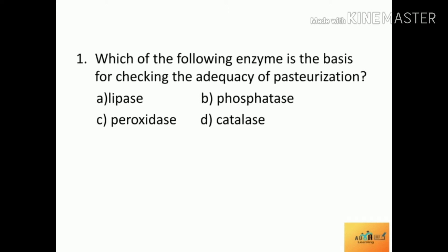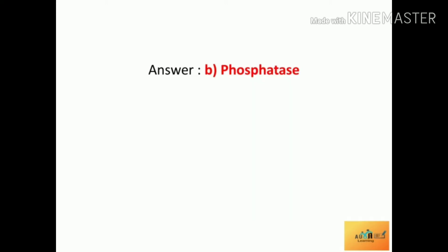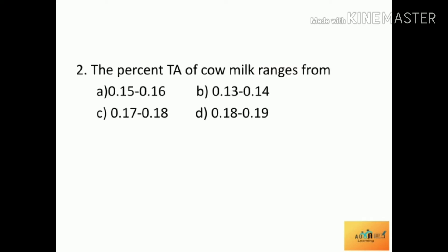First question: Which of the following enzyme is the basis for checking the adequacy of pasteurization? Option A: lipase, Option B: phosphatase, Option C: peroxidase, Option D: catalase. The correct answer is phosphatase. Phosphatase test is used to check the adequacy of pasteurization.